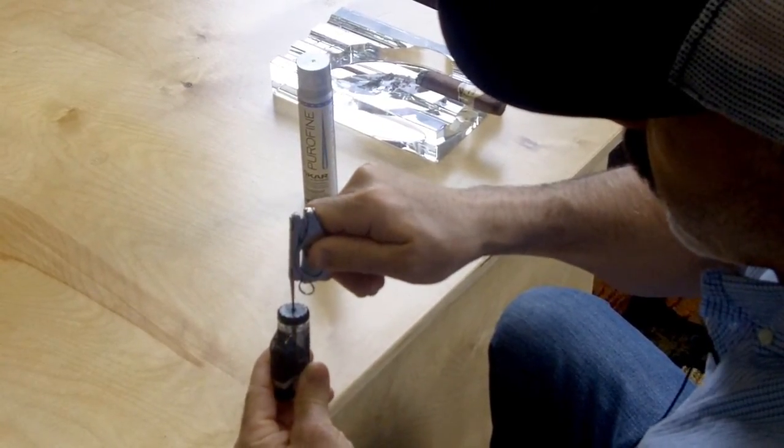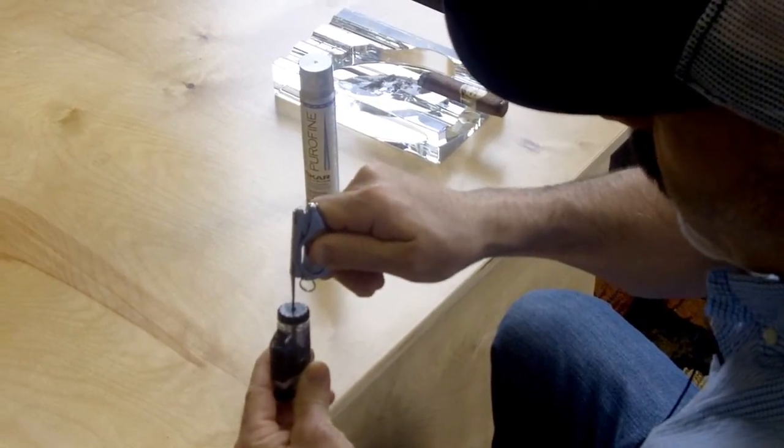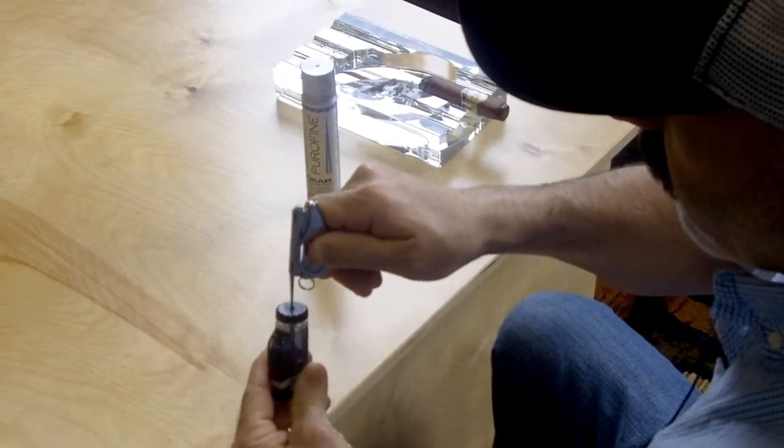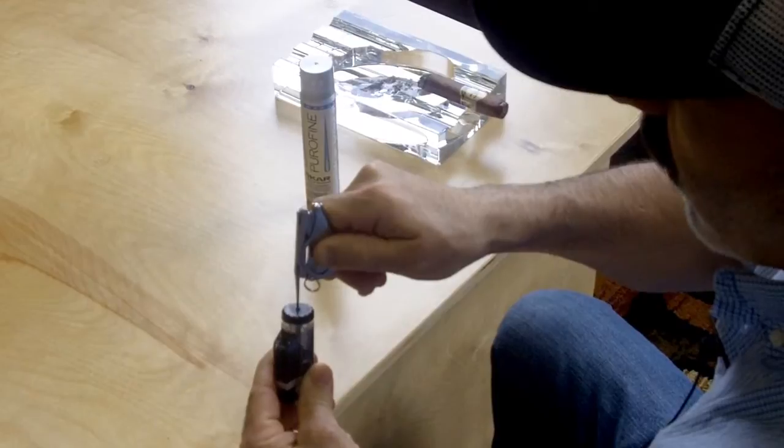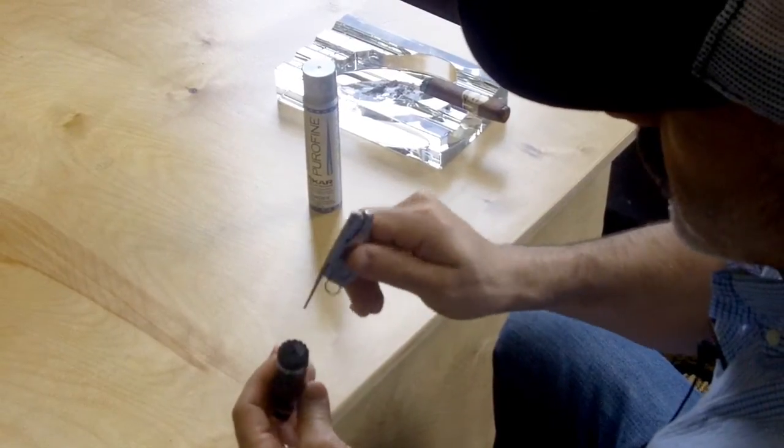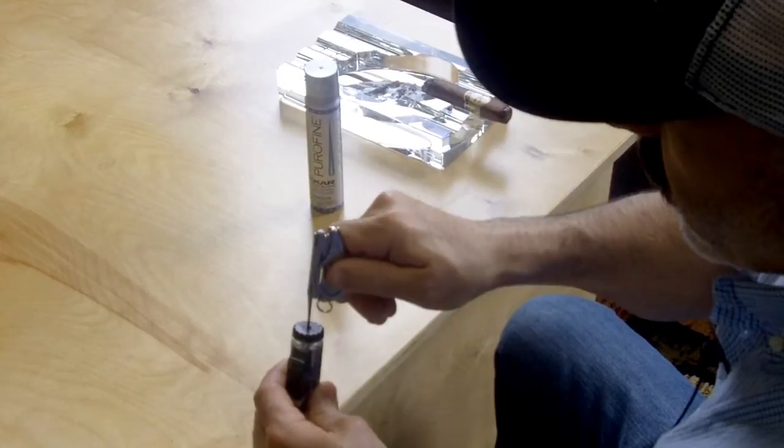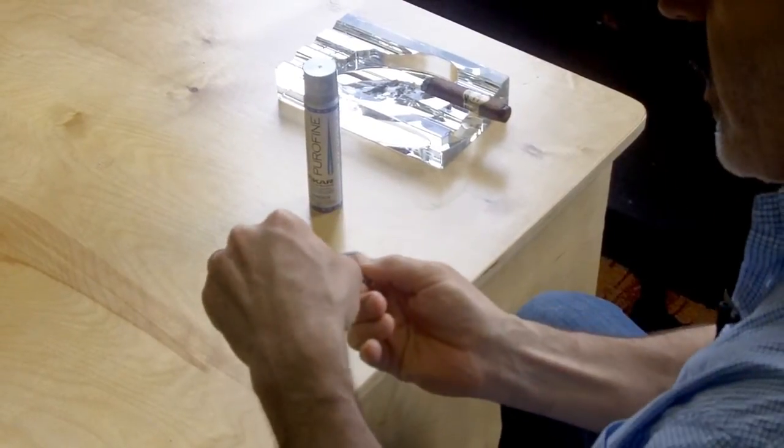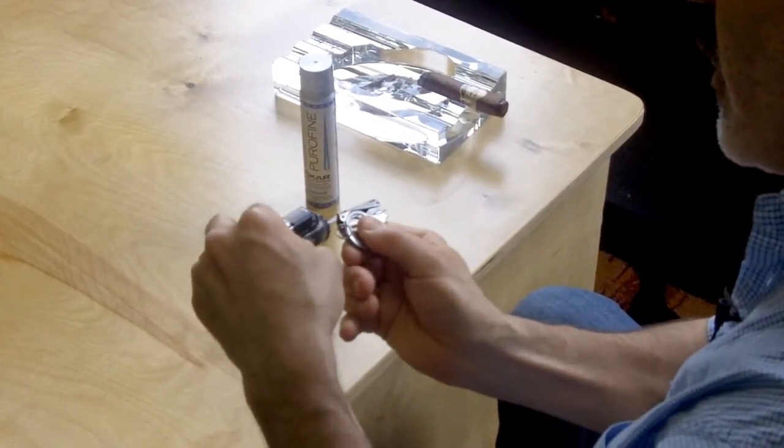A paper clip works, but don't use an ink pen—you'll get ink in the fill valve. I wouldn't use a sharp object; you could damage that fill valve. You just want to make sure you get all the air out of the tank.